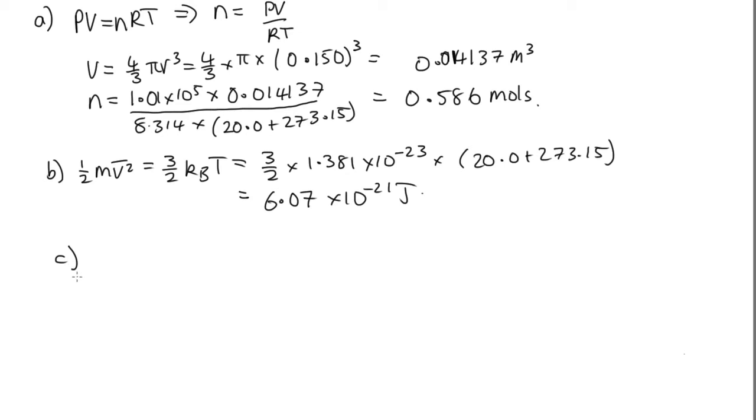Now part C asks, what's the RMS velocity of these helium atoms? So in order to do that, we need to use that v, the average velocity squared, is equal to the RMS speed squared. And so from up here, we can see that vRMS squared will be 3 over 2 kB T times 2 and divided by m.